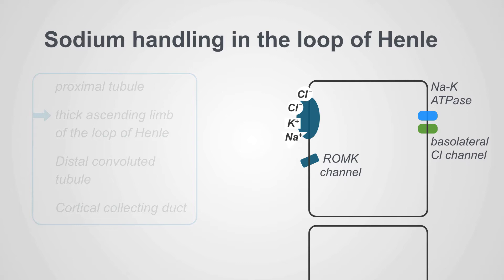The principal molecule here is the sodium-potassium-2-chloride co-transporter. Two molecules of chloride, a molecule of sodium, and a molecule of potassium all bind this and are transported into the cell.